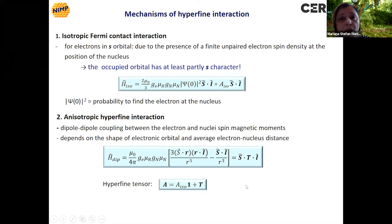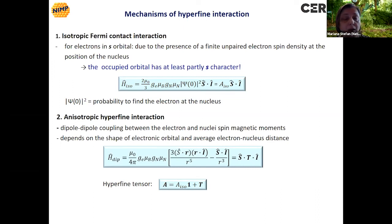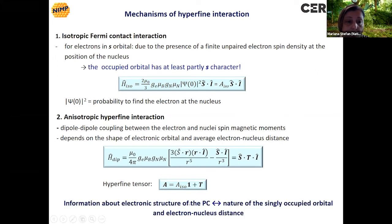There are two contributions to the hyperfine interaction. The isotropic Fermi contact interaction is due to the presence of a finite unpaired electron spin density at the position of the nucleus, as long as the occupied orbital has at least partly an S character. There is also an anisotropic contribution from the dipole-dipole coupling between the electron and nuclear spin magnetic moments, which depends on the shape of the electron orbital and the average electron-nucleus distance. Information acquired from the hyperfine interaction includes the electron structure of the paramagnetic center, the nature of the singly occupied orbital, and the electron-nucleus distance.